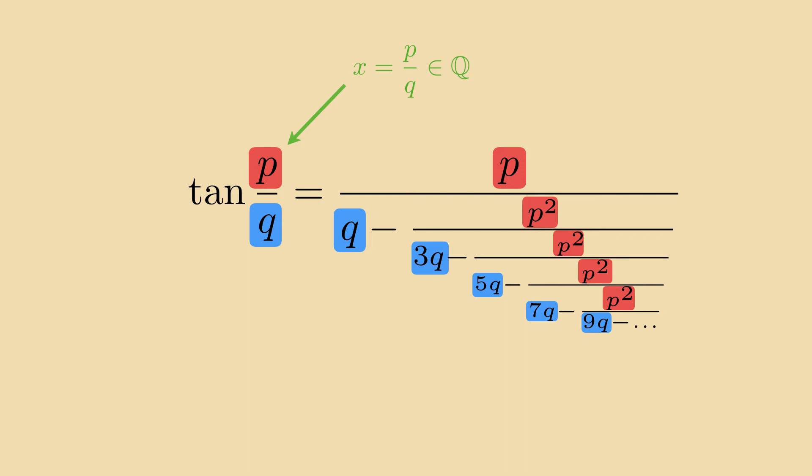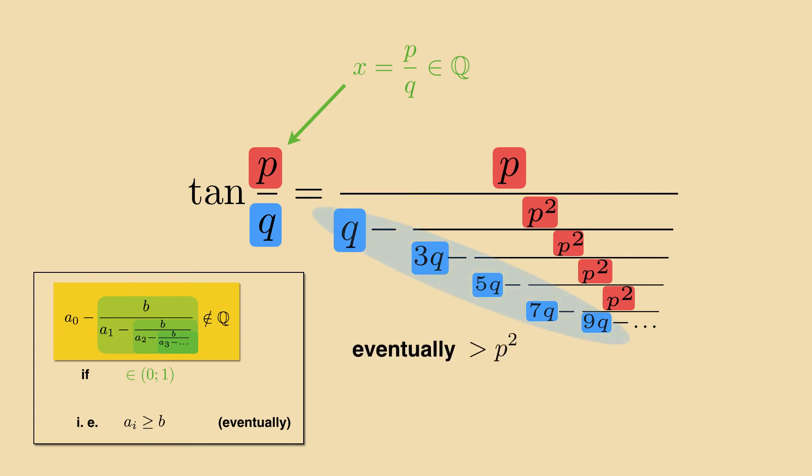But this is exactly the kind of infinite continued fraction that has an irrational value, because it corresponds to a never-ending Euclid's algorithm. The lower entries q, 3q, 5q, and so on eventually surpass p squared. Therefore the tangent of a rational number p over q must be irrational.